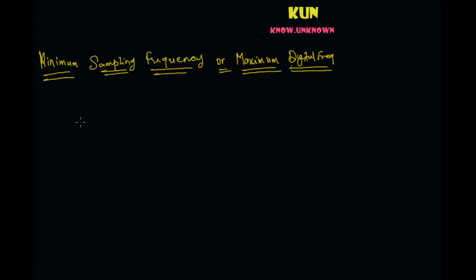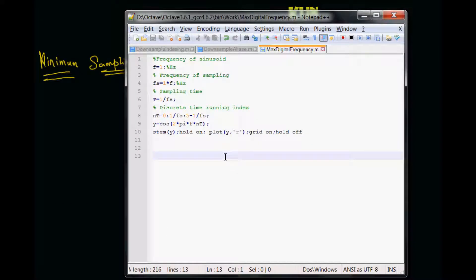Welcome back. In this video, we are going to discuss about the minimum sampling frequency or the maximum digital frequency. So far, the relationships that we have derived when doing time frequency indexing, we used to go up to Fs when we take the Fourier transform. But now, in this video, we will see that we do not need to represent up to Fs. Fs by 2 is sufficient enough to represent all the relevant frequencies contained in my analog signal. In order to explain this, I will take a small numerical example so that we can understand this concept better.